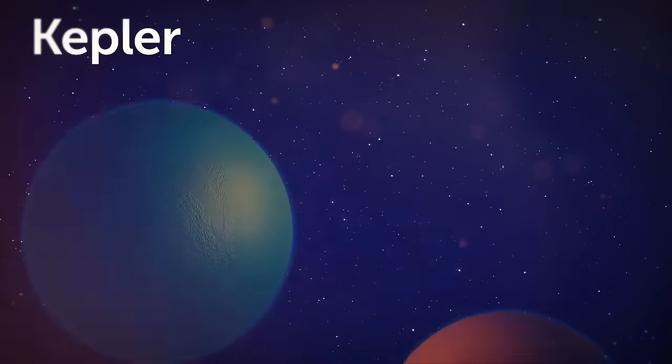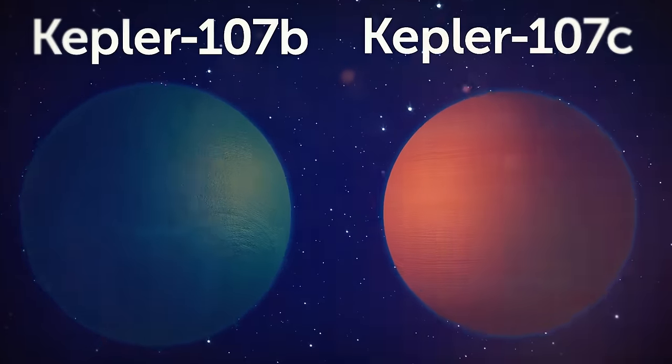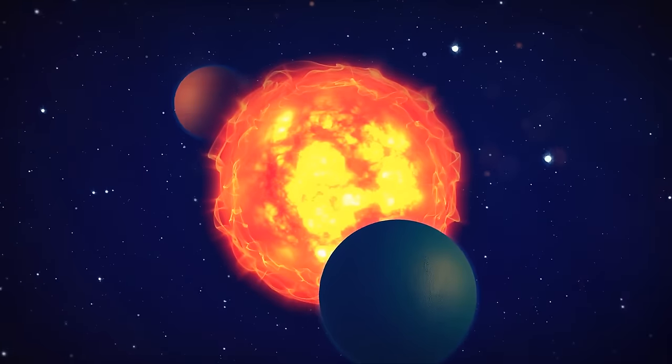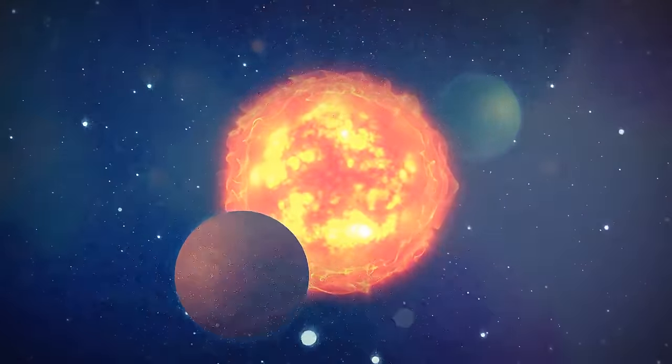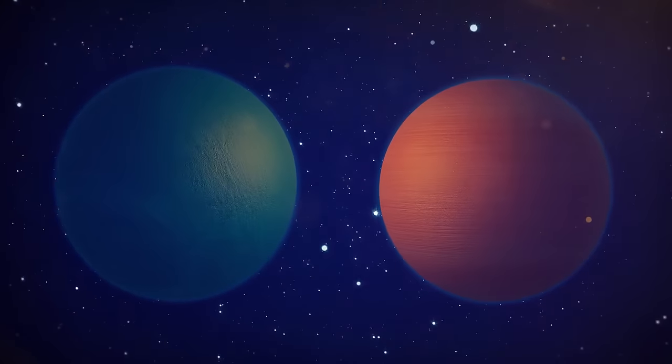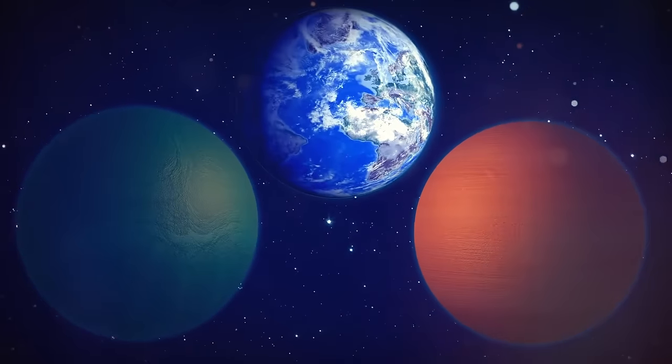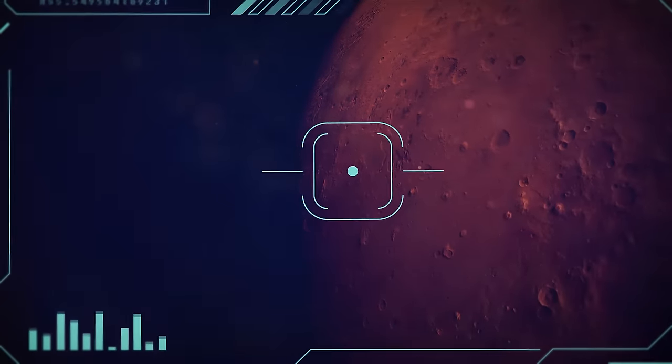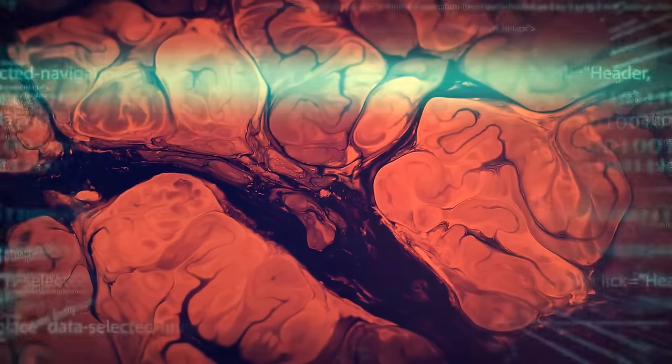Exoplanets Kepler-107b and Kepler-107c are a pair of planets that orbit a star similar to our Sun in the Kepler-107 system. It's around 1,700 light-years away from us. These planets have almost identical sizes, both with a radius one and a half times that of Earth. But one of them, Kepler-107c, is almost three times as dense as the other. That's because the planets have a different composition.